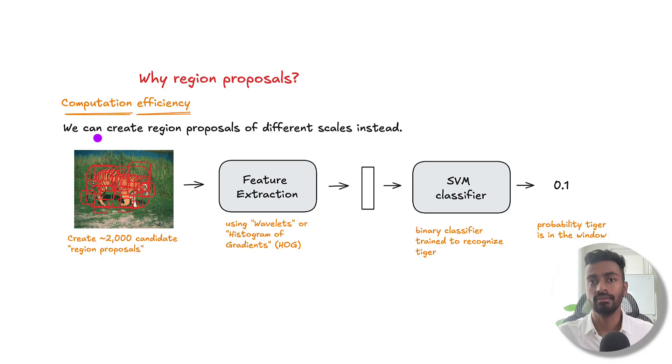Now what we can do in order to mitigate this is region proposals on different scales instead. So what we do at a very high level is that we have an image and we create just 2,000 bounding boxes in total. Each of these 2,000 bounding boxes are region proposals for which we extract features. So we'll have 2,000 of these features.